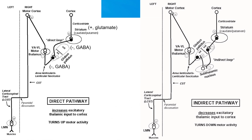The thalamus is a tonically excitatory structure. The ultimate goal for the direct and indirect pathways are to increase and to decrease the excitatory thalamic input, respectively. The part of the thalamus involved is the VA-VL — ventral anterior and ventral lateral motor thalamus, which we covered in the thalamic videos. In the direct pathway, the striatal cells project directly to the globus pallidus internus, and hence it is called the direct loop.